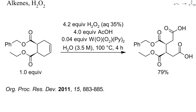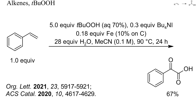Benzylic or ethyl esters can remain unchanged during such oxidations. Despite the acetic acid and high reaction temperature, no transesterification occurred in this example. It is also possible to oxidize terminal alkenes to alpha-keto acids without C–C bond cleavage.